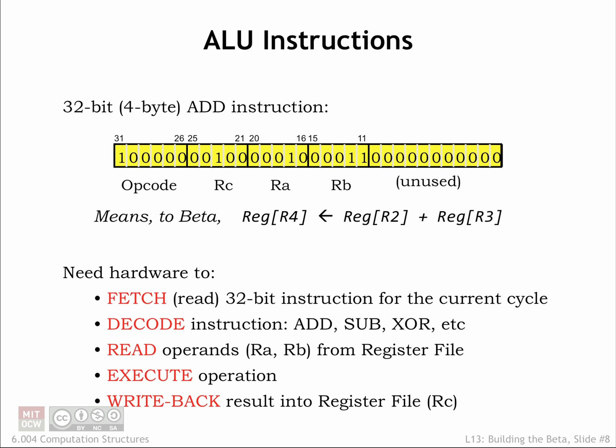Fetch, where the 32-bit encoded instruction is read from main memory from the location specified by the program counter. Decode, where the opcode field — instruction bits 31-26 — is used to determine the values for the datapath control signals. Read, where the contents of the registers specified by the RA and RB fields — instruction bits 20-16 and 15-11 — are read from the register file.